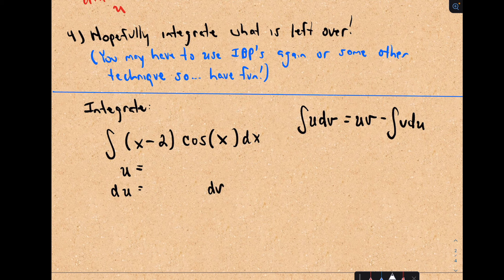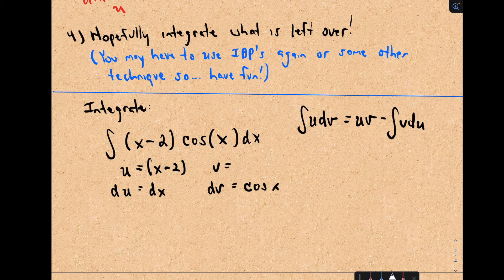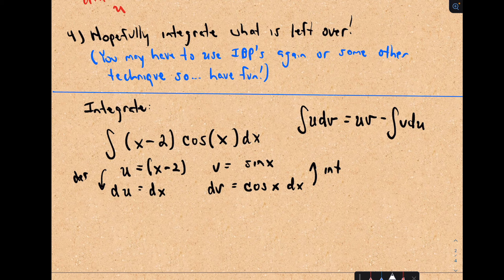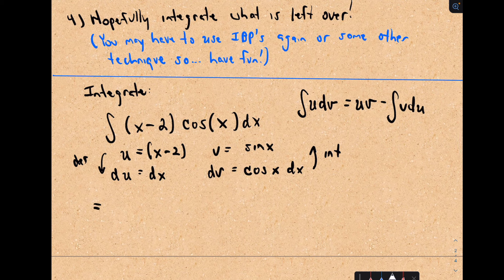So I'm going to pick dv. In this case, I'm going to pick u to be x minus 2. My du is going to be dx — the derivative of x minus 2 is just 1, then tack on dx. So dv would have to be the other stuff: cosine of x dx. The antiderivative of cosine of x is just sine x. Be careful — here we're taking a derivative and here we're integrating. You're doing derivatives and antiderivatives mixed together, so make sure you keep track of that, because that's definitely a place where mistakes are made.